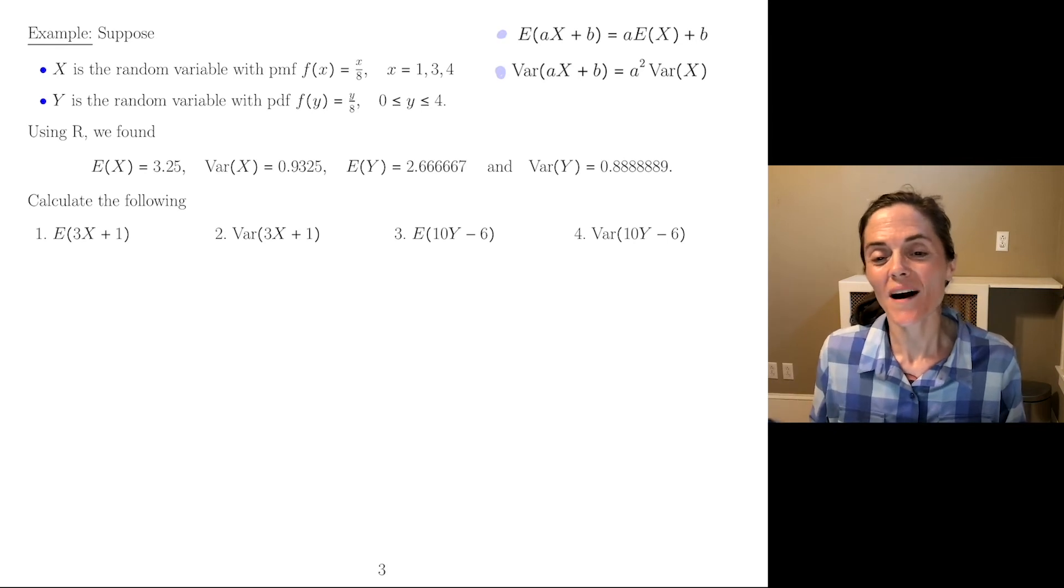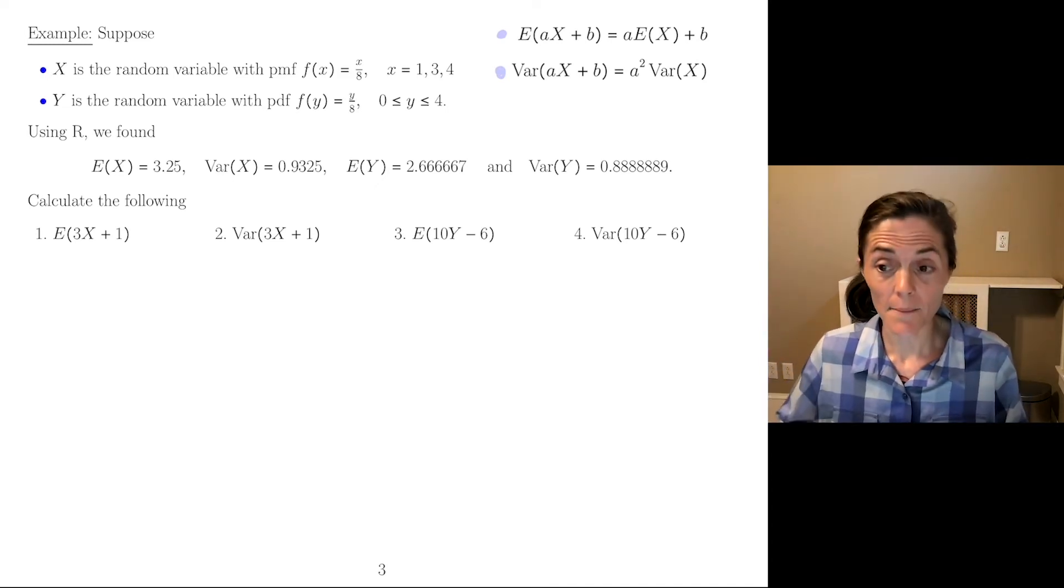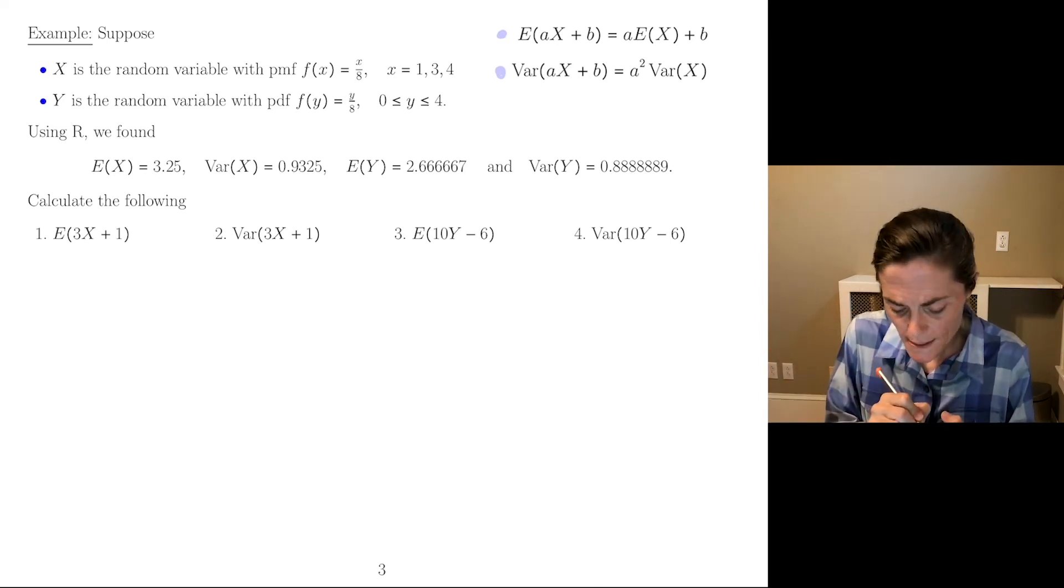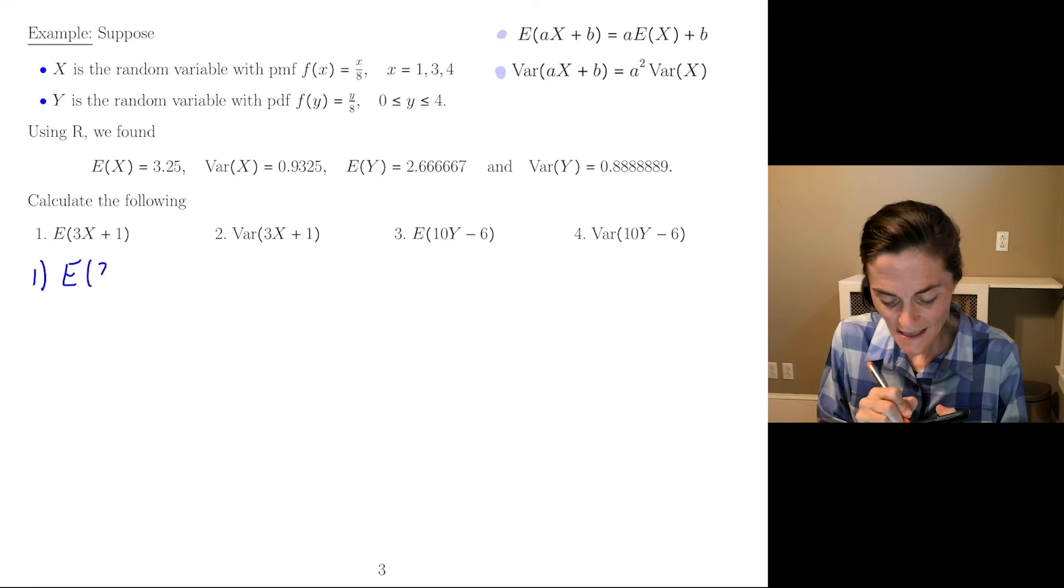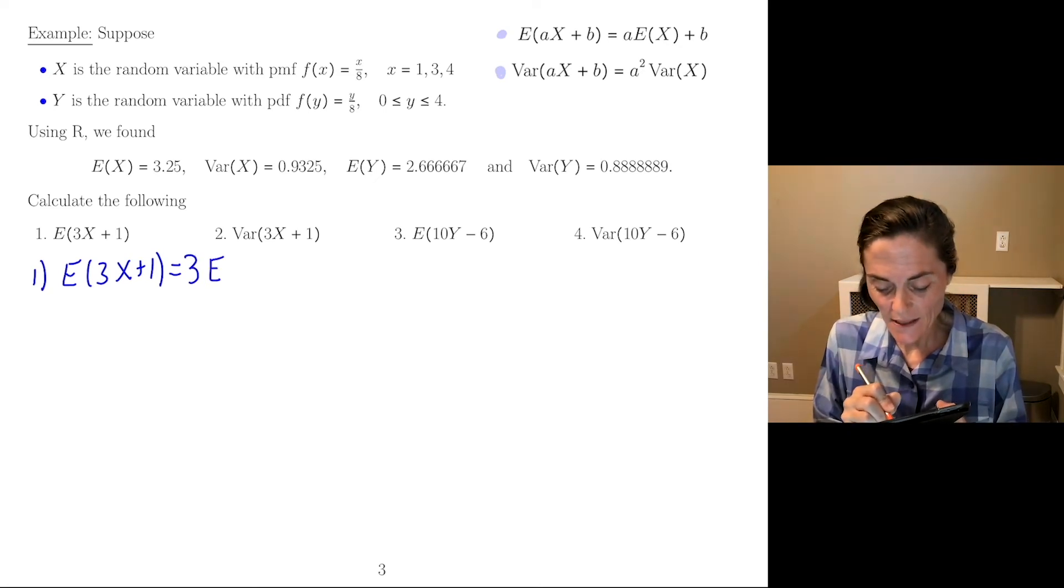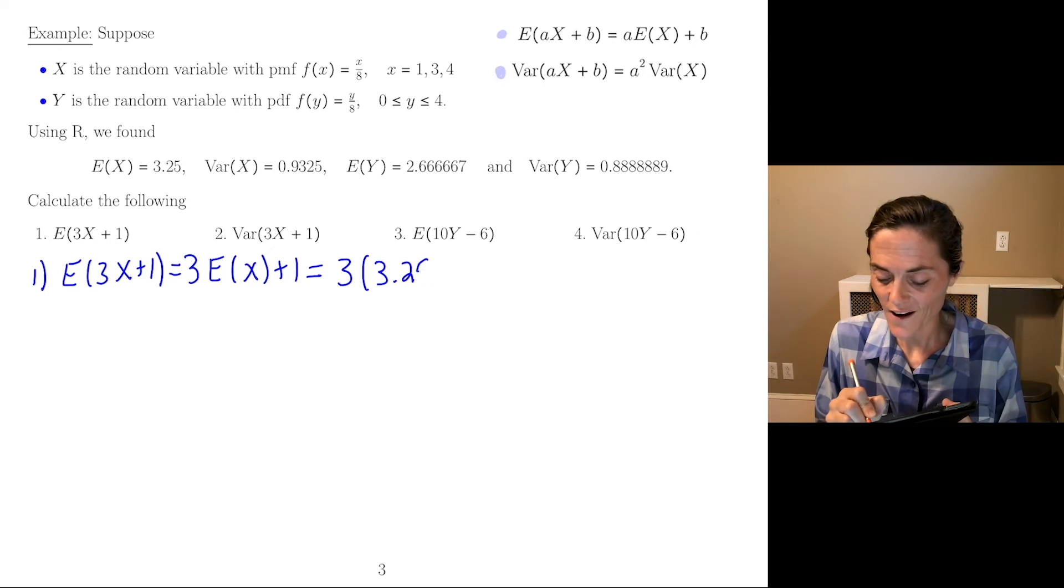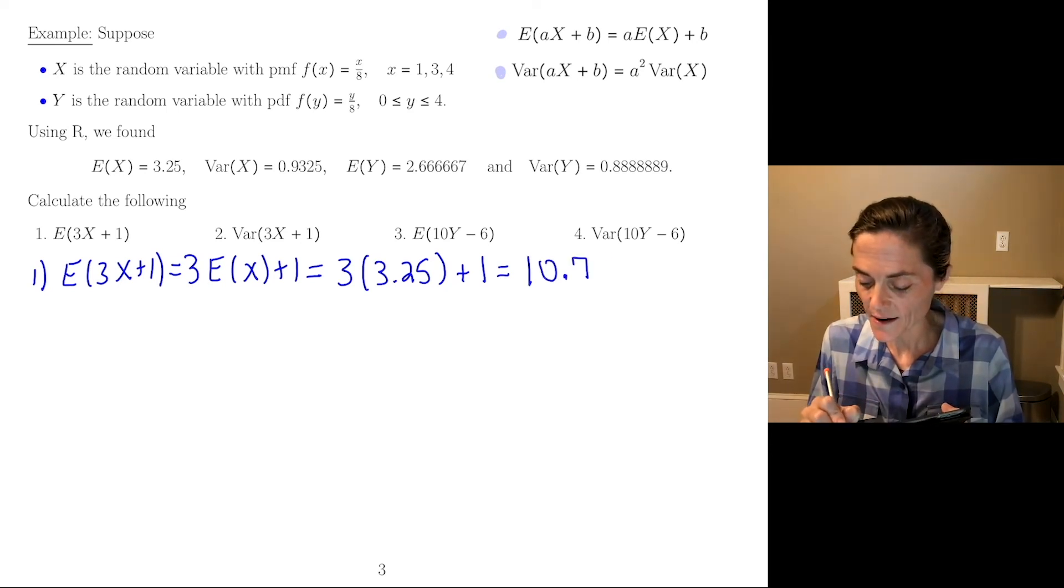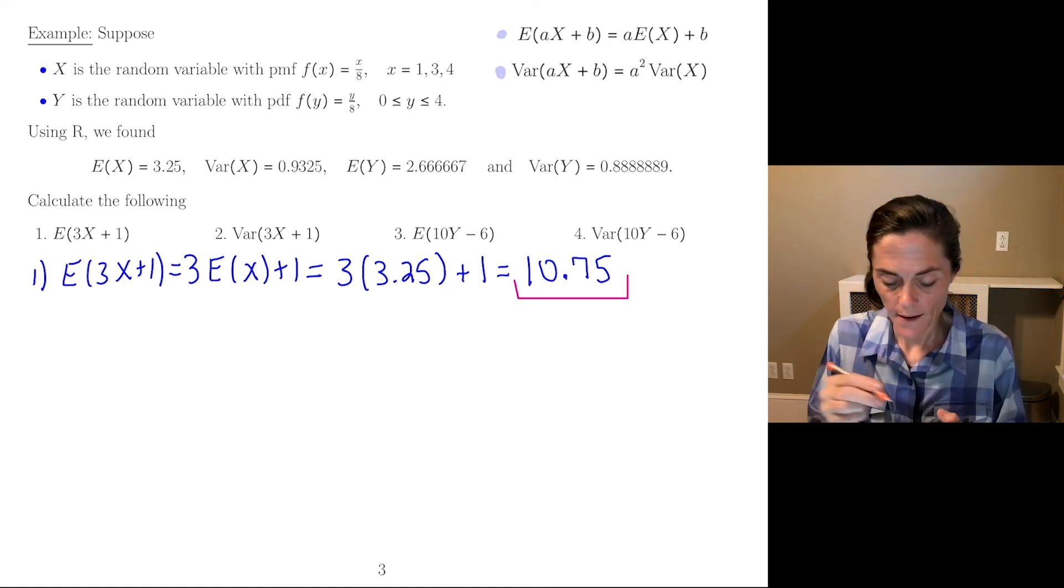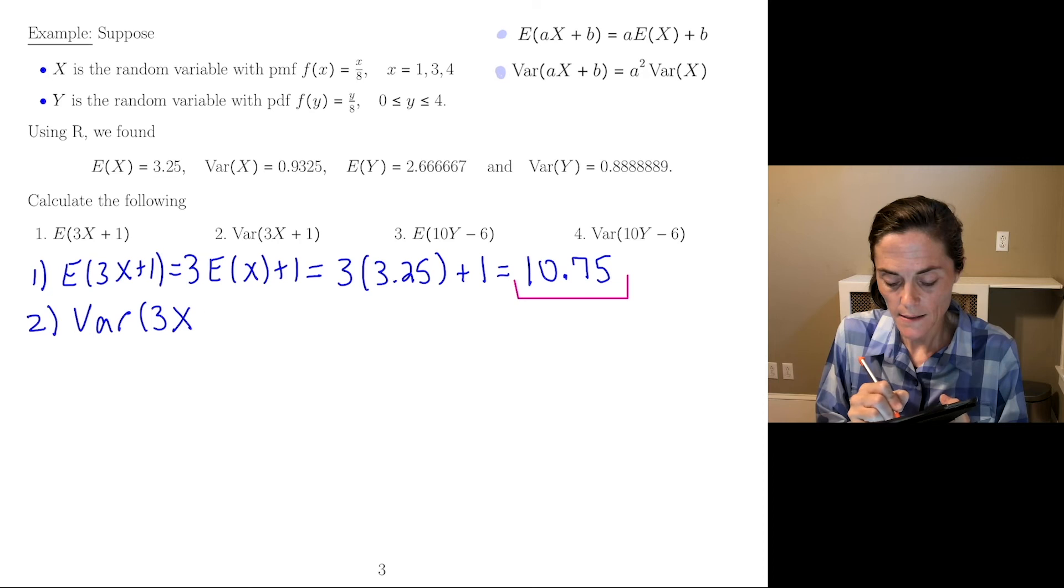What we want, we just want four quantities here. We want the expected value and variance of 3X plus 1. We want the expected value and variance of 10Y minus 6. You notice I do not need to calculate the supports here. All I need are expected value, variance, and let's use our formulas. So the expected value of 3X plus 1, well, this would be 3 expected value of X plus 1. And here, this would be 3 times 3.25 plus 1. We get 9.75 plus 1 or 10.75.